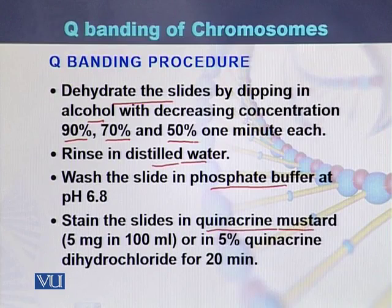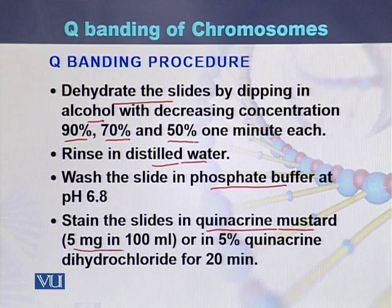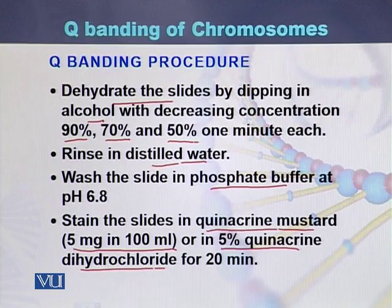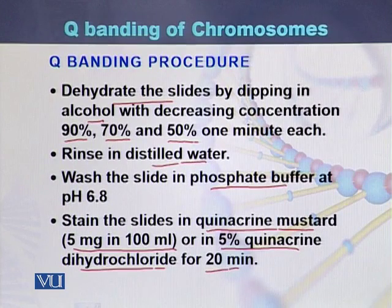Quinacrine mustard is used for staining the chromosomes — 5 mg in 100 ml. Alternatively, one can use 5% quinacrine dihydrochloride. Either dye is applied for 20 minutes, after which a banding pattern appears on the chromosomes, which is called Q banding.